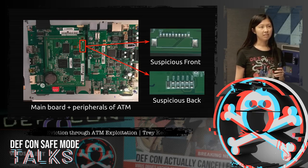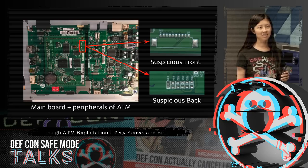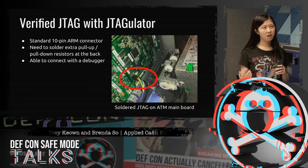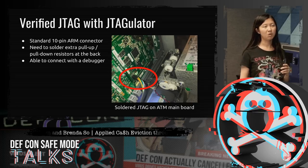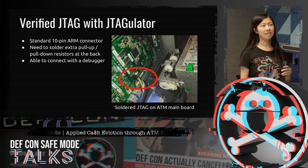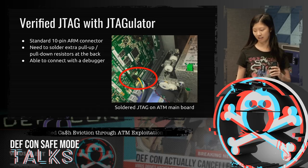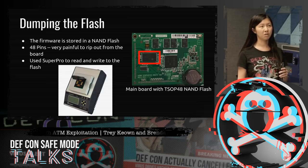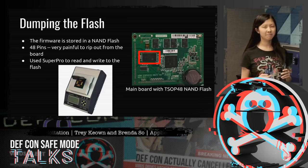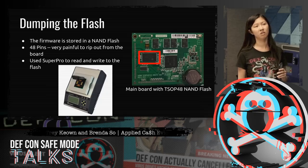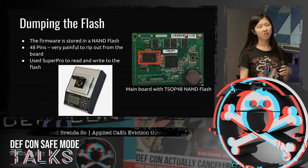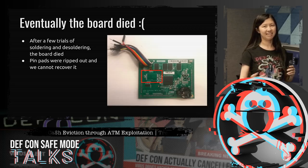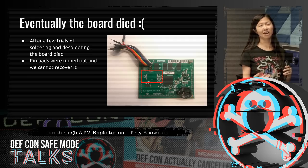On the main board, we found suspicious pads and resistor pads on the back — it turned out to be a standard 10-pin ARM JTAG connector. After soldering pull-up and pull-down resistors, we connected it with JTAGulator, identified it as JTAG, and used a JTAG debugger to interface with the ATM. The firmware is stored on NAND flash — 48 pins and surface mount, painful to remove. We desoldered it and used a SuperPro flash reader-writer to read and write it, but eventually the board died from too many soldering cycles.